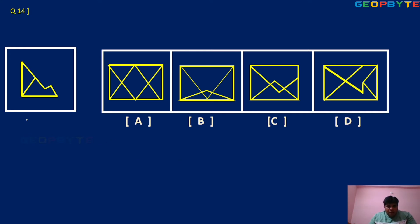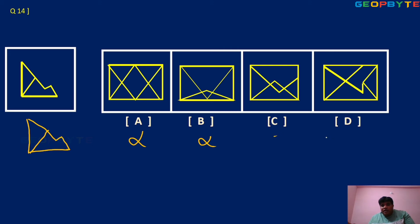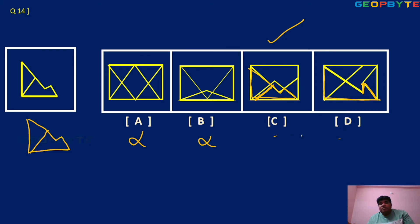Observe this problem. In option A clearly wrong, option B clearly wrong. In option C — this line okay, this one okay, this one okay — so option C is the exact answer. In option D, the L shape and lines are almost right, but this line is curved and lengthy. According to the question, option C is 100% satisfied.